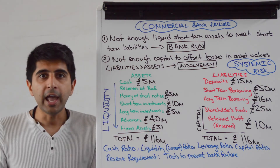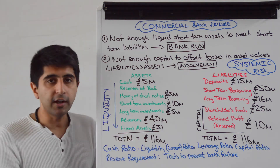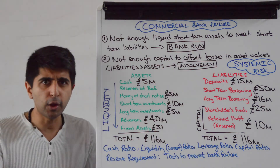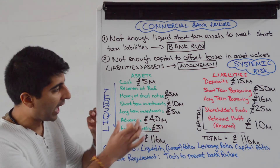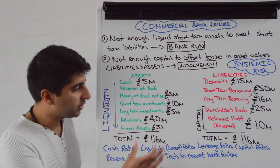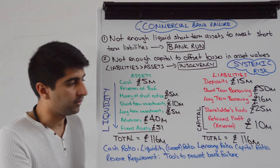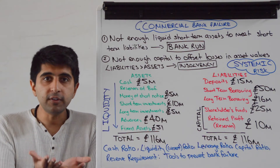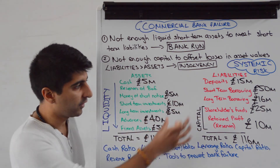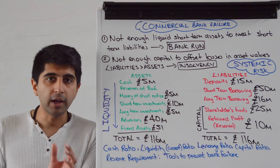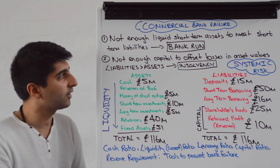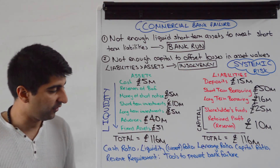We've got something known as a leverage ratio — that is looking at the ratio of capital to advances and also long-term investments, to make sure that a commercial bank holds enough capital to offset any losses in long-term investments and advances, which in theory will reduce the risk of insolvency. So imposing or increasing the leverage ratio would be the regulation there. You've also got capital ratios — that's looking at the ratio of capital to advances, i.e. the capital to loans ratio. The whole idea is to make sure that a commercial bank holds enough capital to offset any losses in loans issued, again to prevent the risk of insolvency and reduce the risk of bank failure.